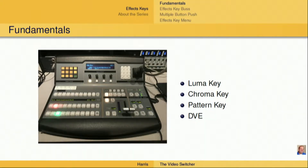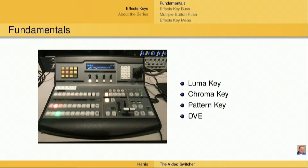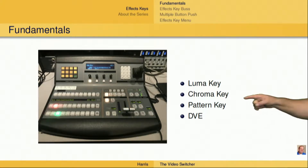I'm going to give you just a little bit of information about these, but I do have additional videos on these different types of keyers available on our YouTube channel. First of all, we've got the luma key. The luma key uses the luminance of the picture to determine what needs to be keyed out. This is also called a self key because it just needs one source of video in order to perform the key. We can either key out the darkest areas of the image, meaning the black, or the lightest areas of the image, meaning the white.